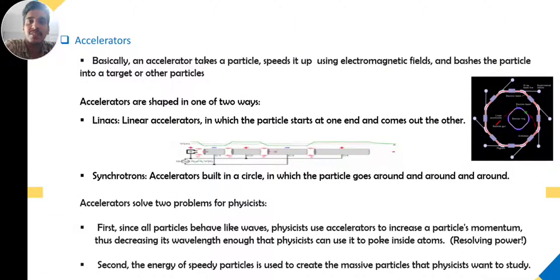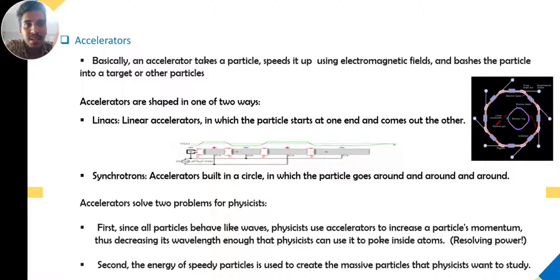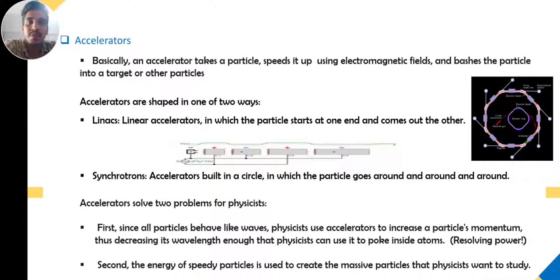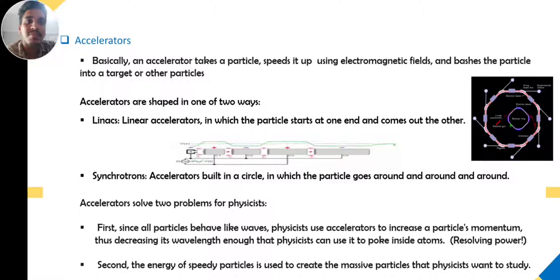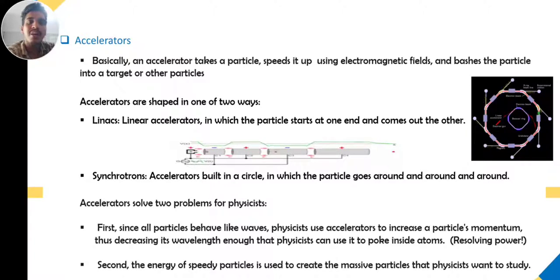There are two types of accelerators. One is the linear accelerator, in which particles start at one end and come out the other, as you can see in the figure. The particle is confined using positive and negative voltages applied along with a magnetic field. It works on an electric field-based setup with polarity change.